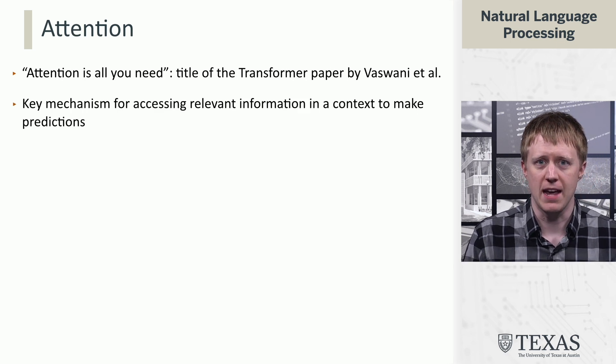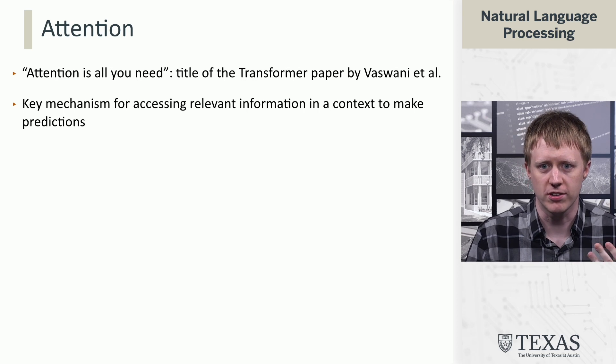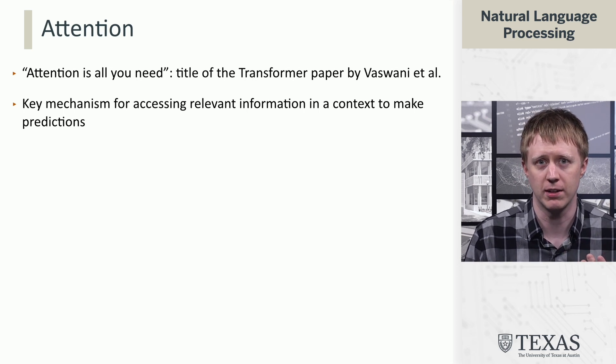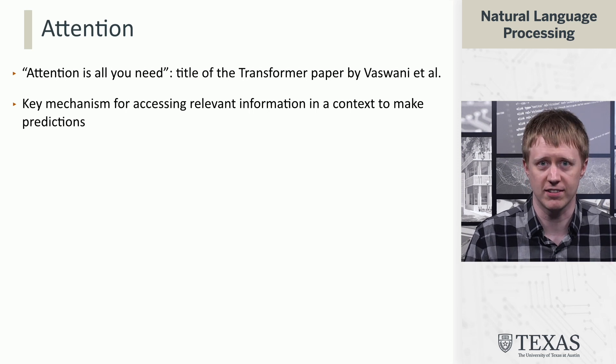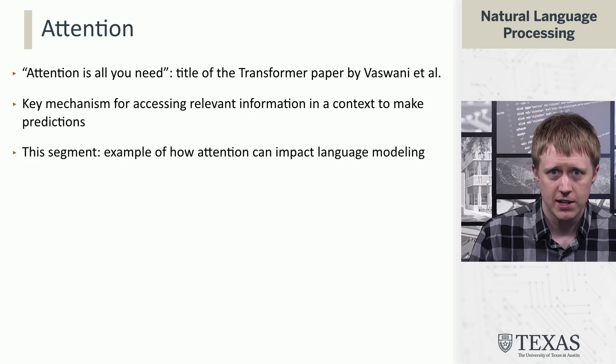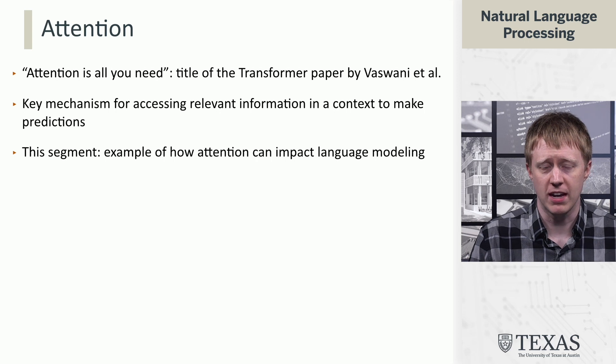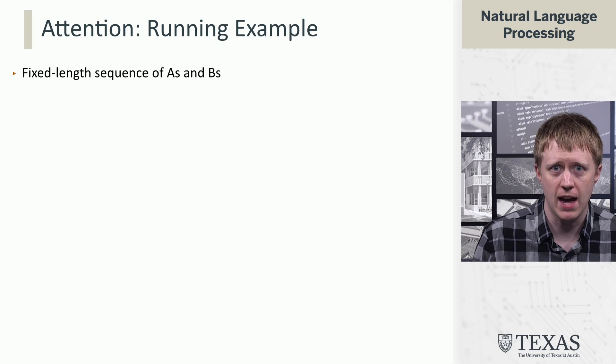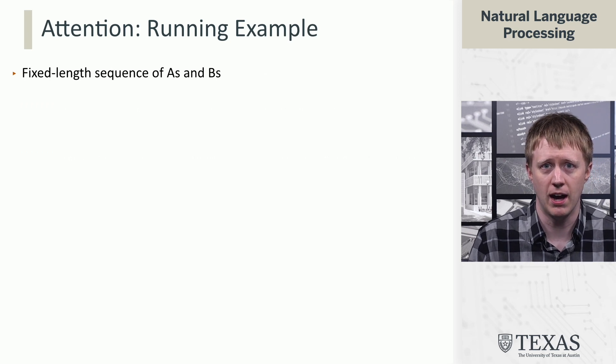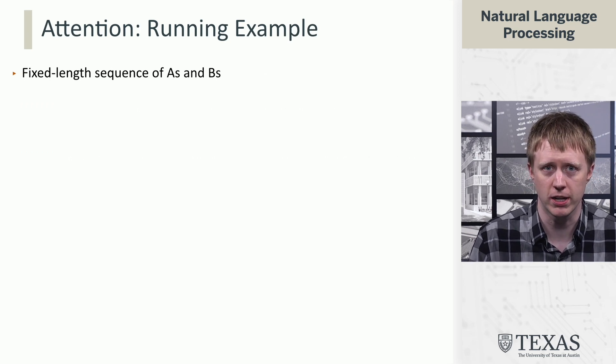So attention is going to be a mechanism for accessing information in the context to be able to make predictions. This is the problem that we've been wrestling with as we've looked at feed-forward networks, DANs, RNNs, things like that. And here we're going to talk about how attention can impact language modeling and how it can be used there. We're going to do that via a running example that's cooked up to show you what it can do.